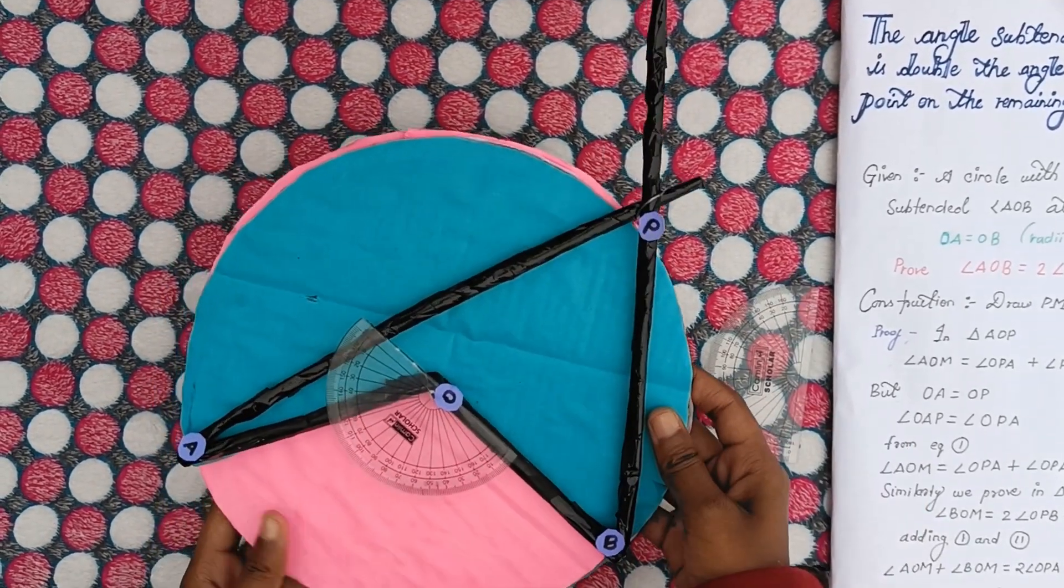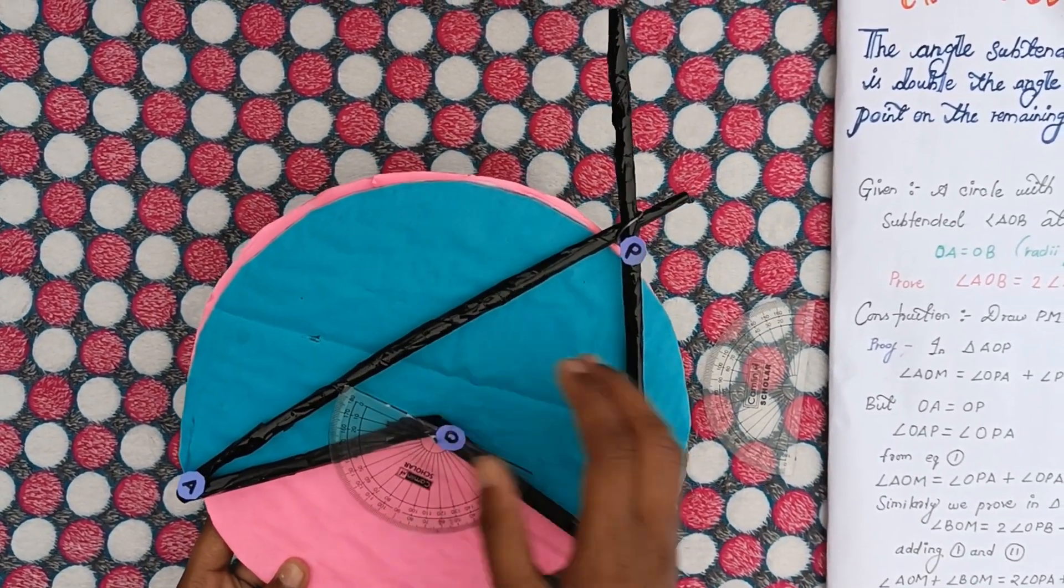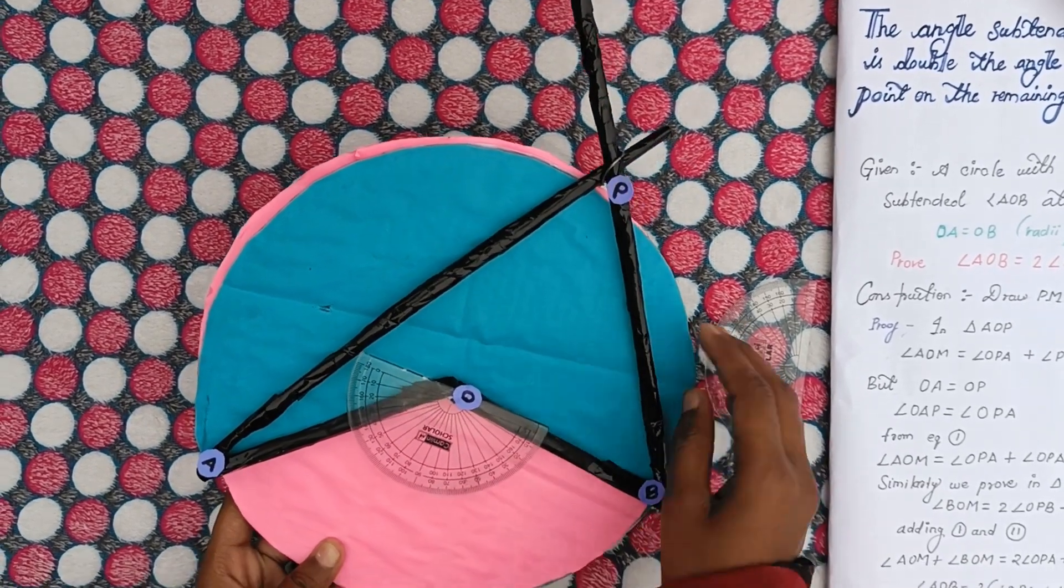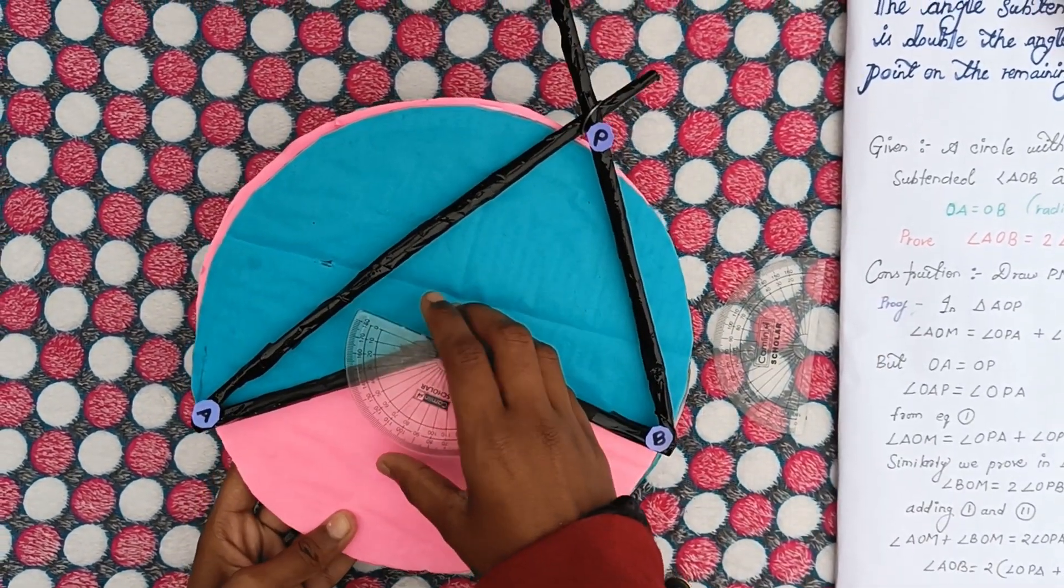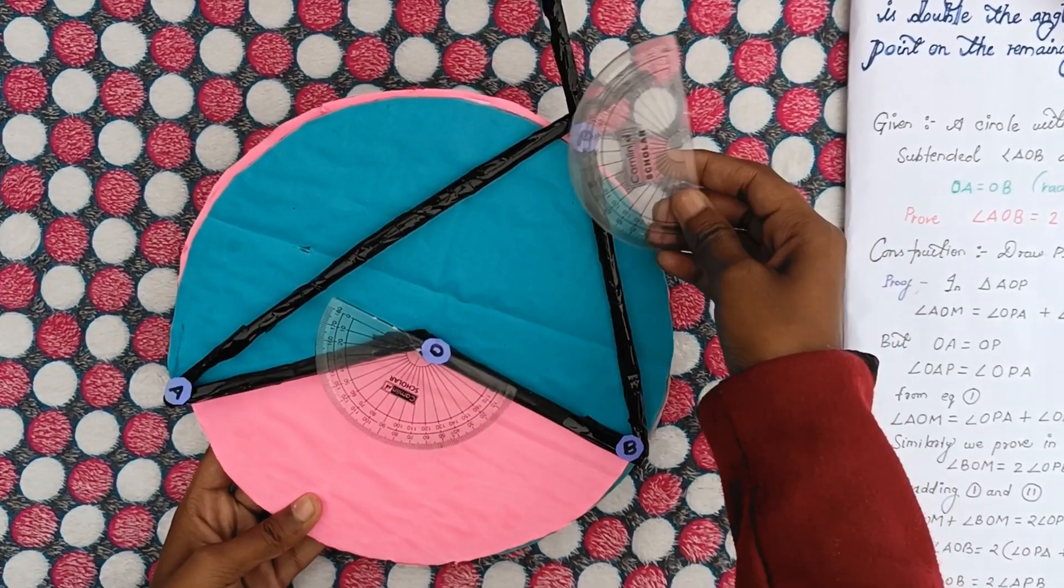By taking another example, as this angle is 140 degrees. If this angle is 140 degrees, this angle will be 70 degrees.